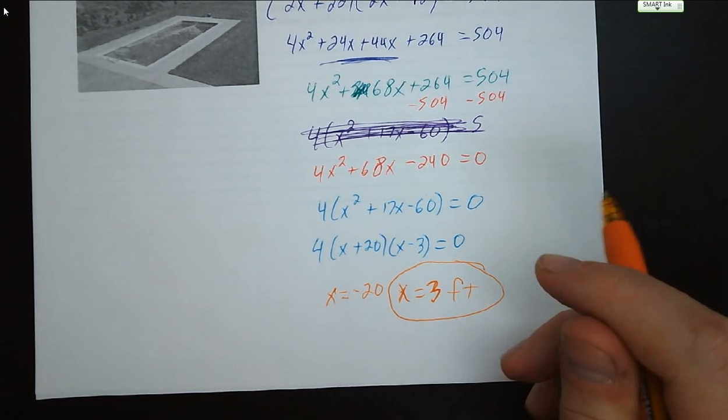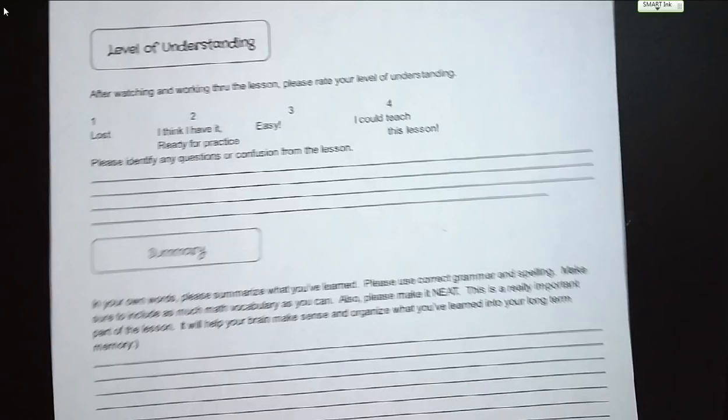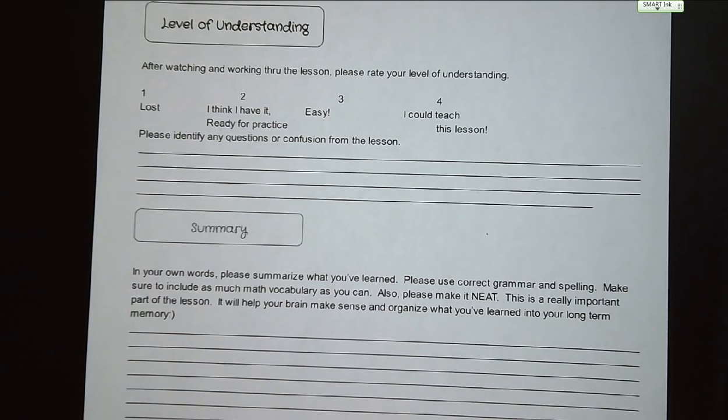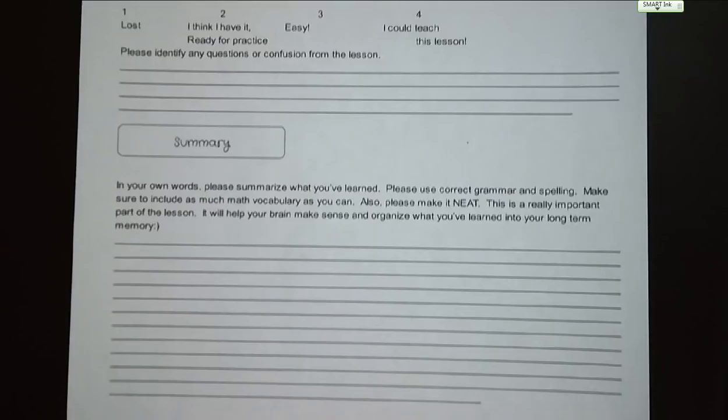The last page is your level of understanding. Make sure you write down your level of understanding and identify any questions or confusions you may have on this lesson. Also write a summary of how we can use factoring to find the solutions of quadratic equations. That is all for the notes for today — have a good night.